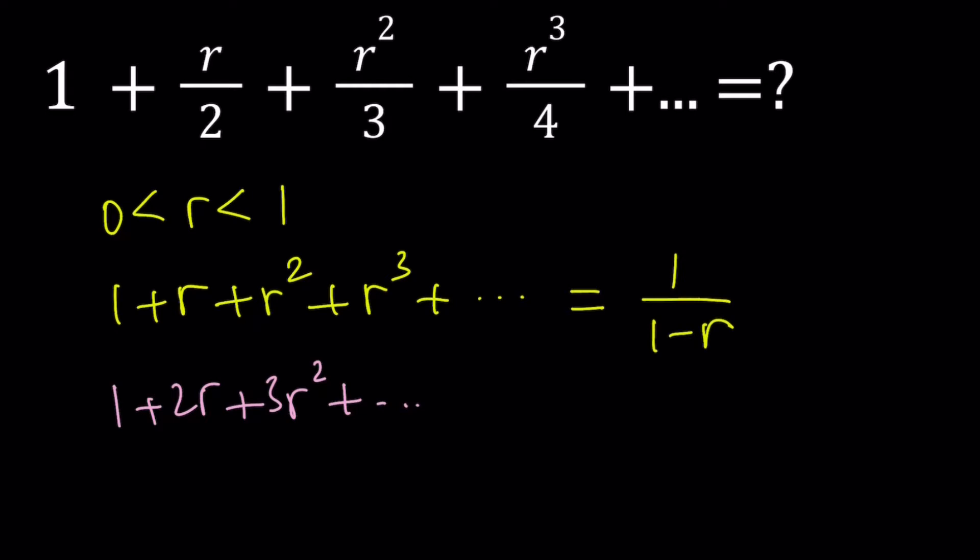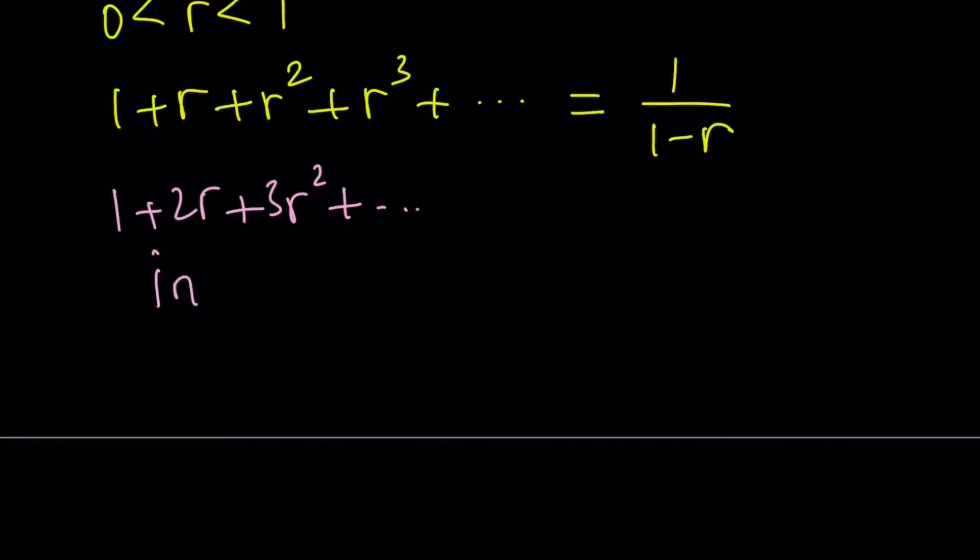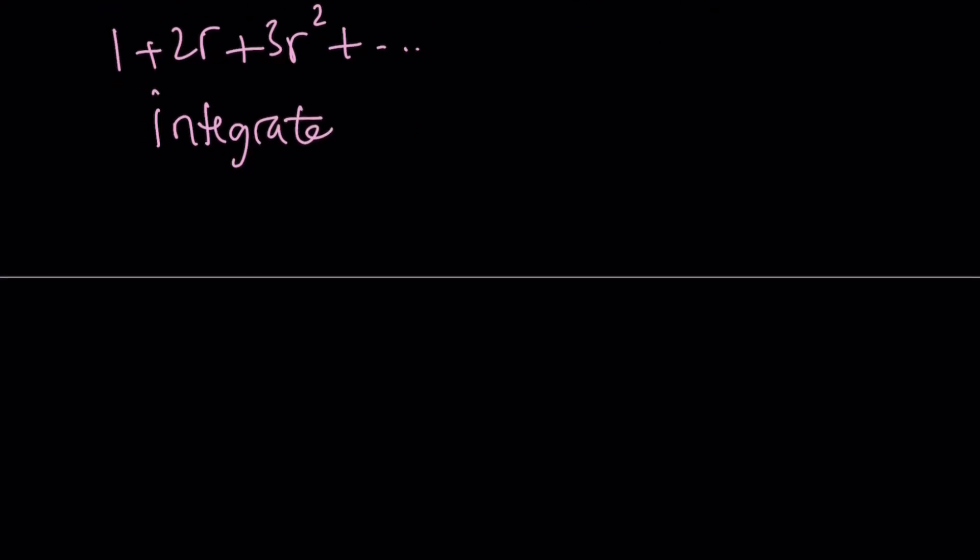So let's go ahead and integrate. That's what we're going to do. Integrate the following expression. What happens if you integrate it? So here's what we're going to get: the integral of 1 plus r plus r squared plus r cubed, and so on, dr. And that is going to equal, since it's equal to 1 over 1 minus r, we're just going to integrate both sides with respect to r.